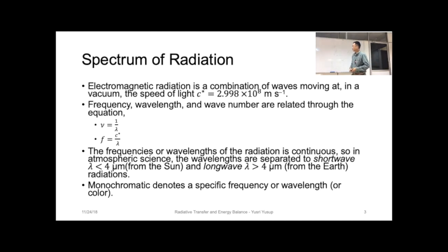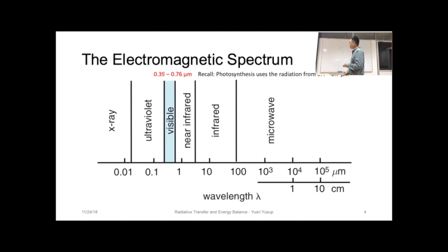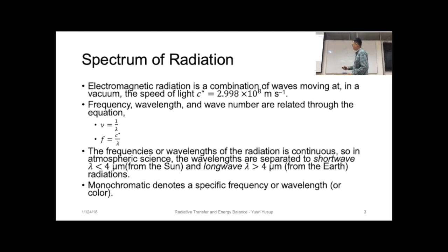Another term is monochromatic. Mono means one, chrome is another word for color, so one color. Monochromatic denotes a specific frequency or wavelength because in this radiation spectrum, a certain wavelength, like say here, corresponds to a certain color.